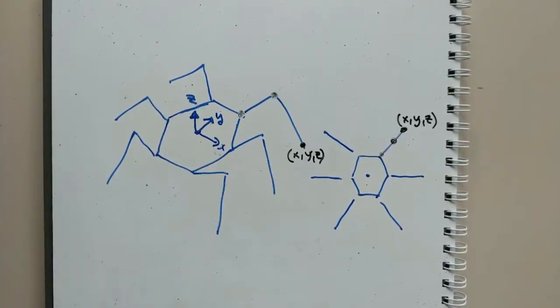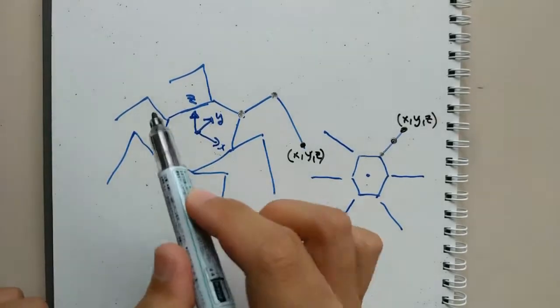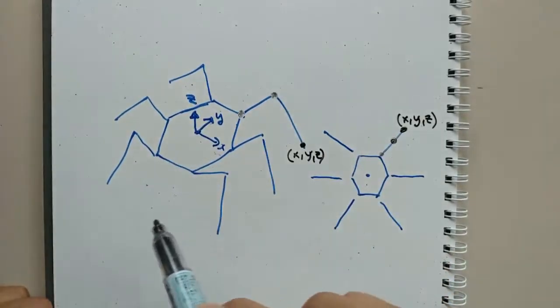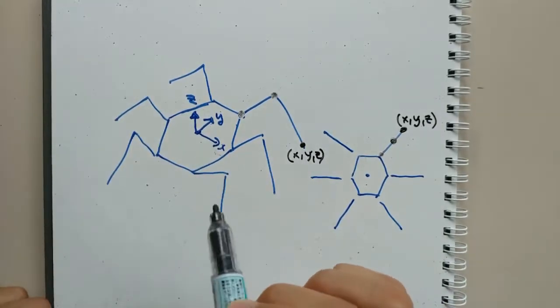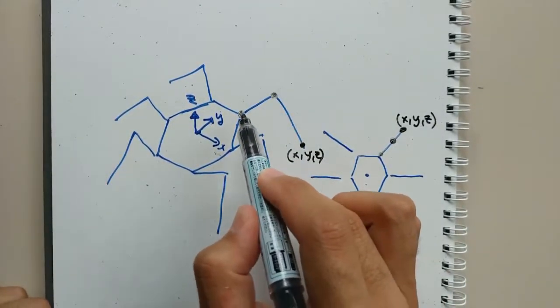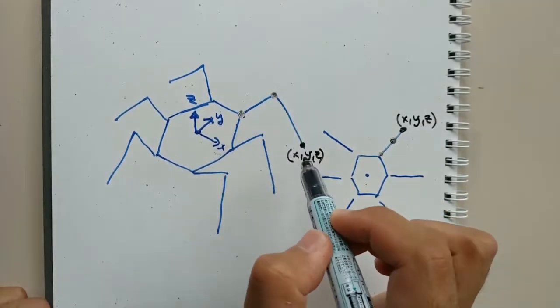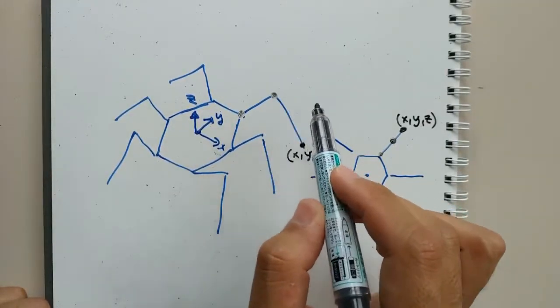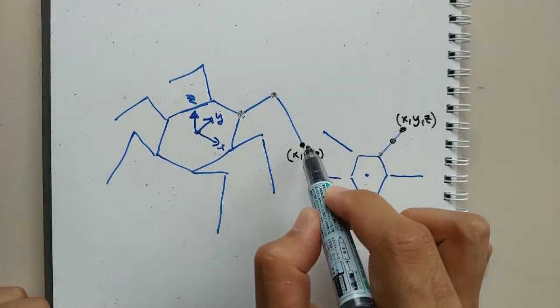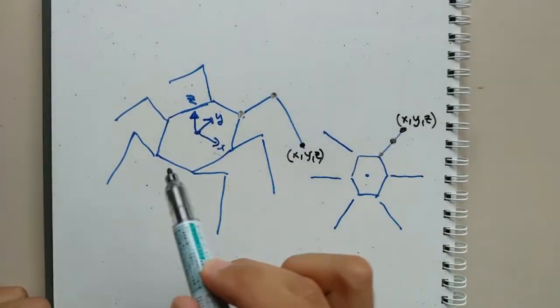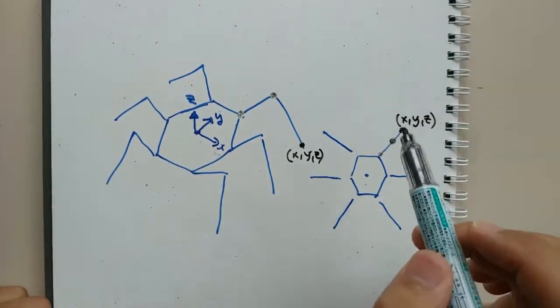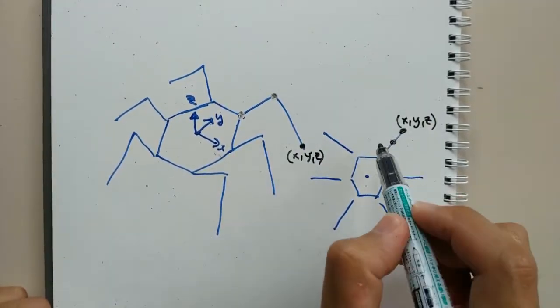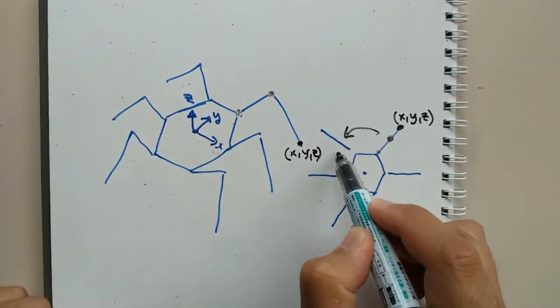The reason I focus on a single leg in this video is that finding the entire robot's inverse kinematics is much more difficult. But if we know how to solve inverse kinematics for a single leg, then we can solve for the entire body because it's just a matter of rotating around the z-axis.